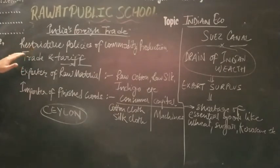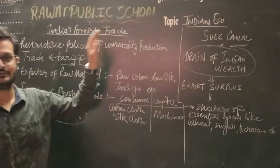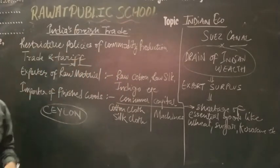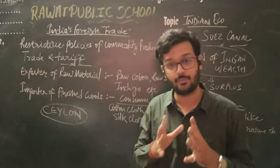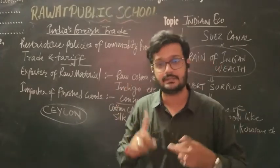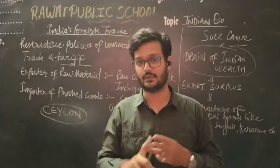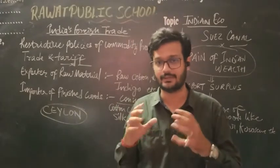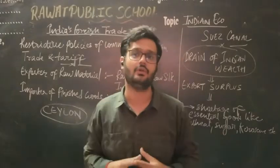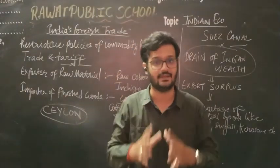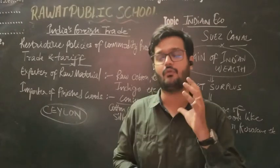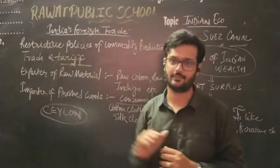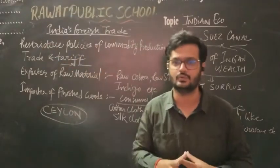Restrictive policies followed by the British rule — restrictions related to commodity production, trade, and tariffs. Controls are very important: what we are doing in commodity production, what we are doing in trade, what we are doing in taxes and tariffs. Tariffs are basically taxes on imported goods. These restrictions controlled which country we trade with, how much tax is levied, giving the British full control — a monopoly.